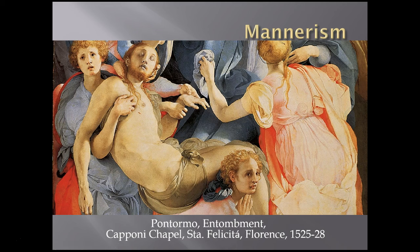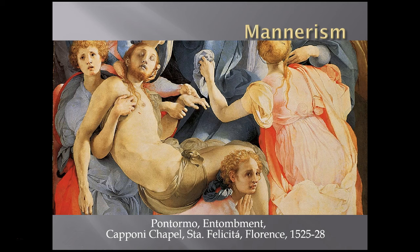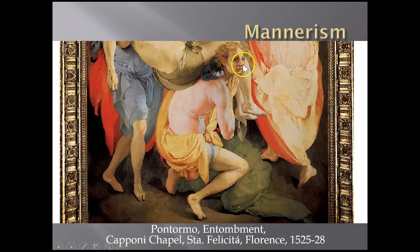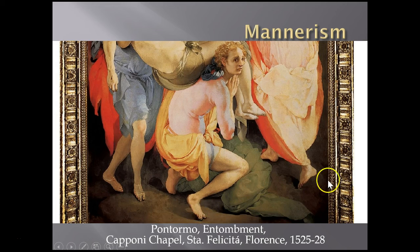Looking at details, the figure of Christ clearly conveys dead weight — you really get a sense of how Pontormo communicated that idea. Note the elaborate poses of the figures; they're very unusual and not something people would do in real life. For example, one figure helping to balance the dead Christ appears to be on his tiptoes — an unusual pose. Someone removing a dead body probably would not be in this position. These unusual poses are one of the key stylistic conventions of Mannerist painting.